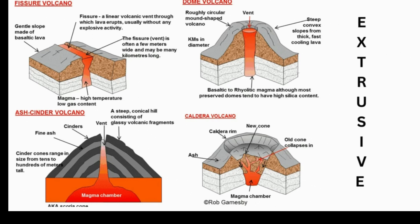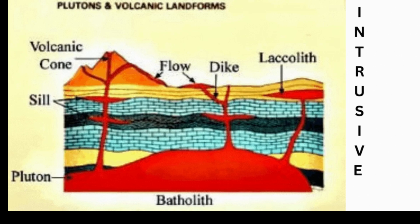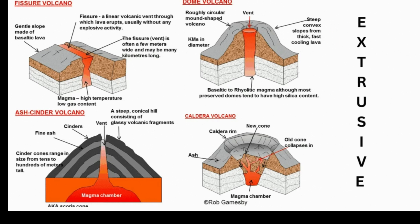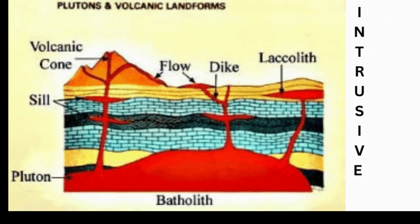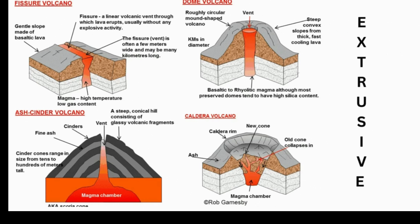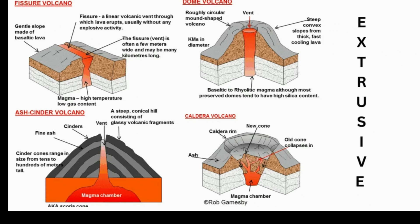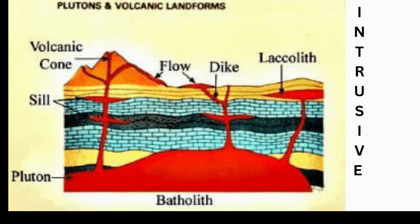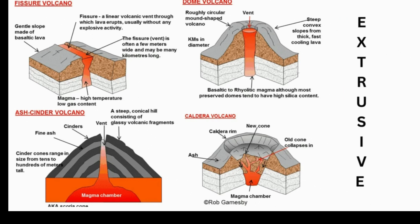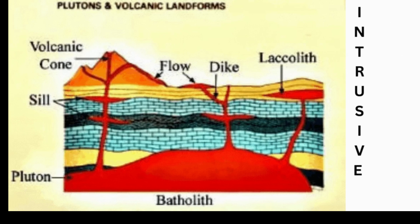Intrusive rocks are associated with intrusive volcanic landforms and extrusive rocks are associated with extrusive volcanic landforms. These extrusive volcanic landforms include lava plateau, shield volcano, composite cone, volcanic dome, caldera and so on. These differ in their shapes and composition.